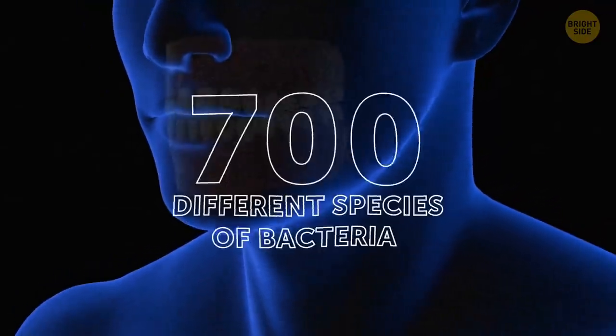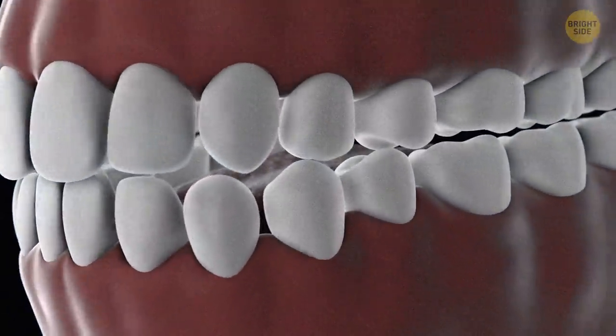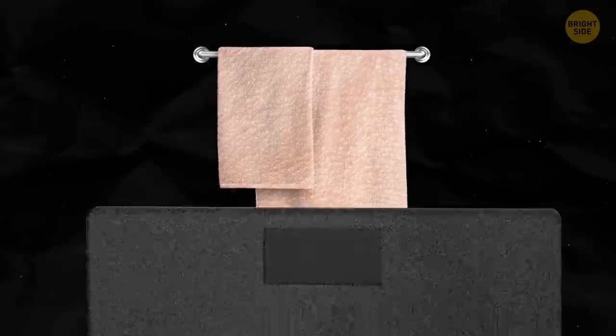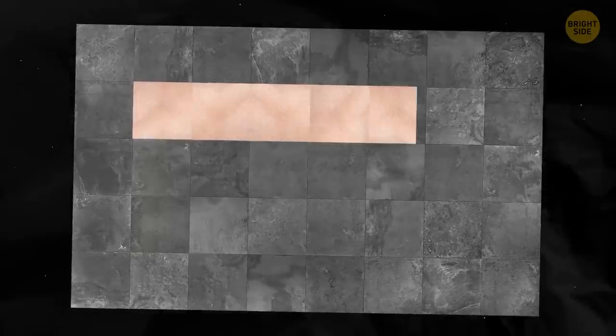There are around 700 different species of bacteria in your mouth. Over 6 billion of them live there. Your skin is your largest organ. It can cover the surface area of two bath towels. It accounts for around 16% of body weight, and is around 22 square feet.